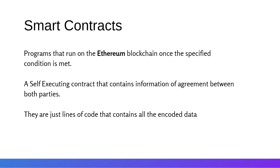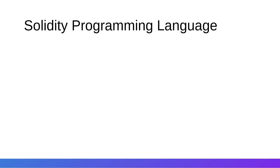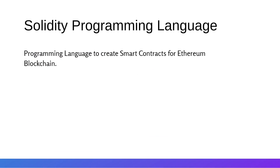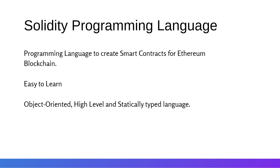We can create smart contracts with many programming languages, but in this course we will focus on the Solidity programming language. Solidity helps us create smart contracts for the Ethereum blockchain. It is a statically typed, curly-brace programming language designed for developing smart contracts that run on the Ethereum blockchain. It is easy to learn and implement, especially if you know JavaScript or C++. It is object-oriented, high-level, and statically typed — meaning variable types are defined statically, unlike JavaScript where any type of value can be assigned to any variable.